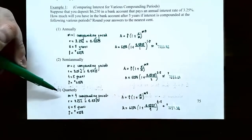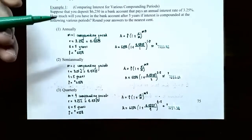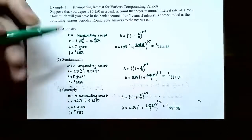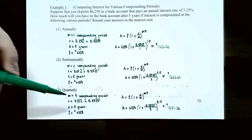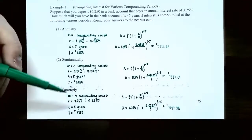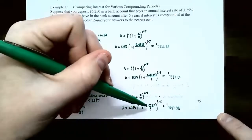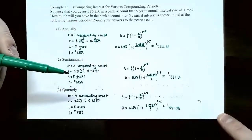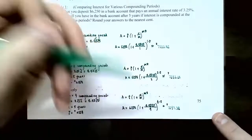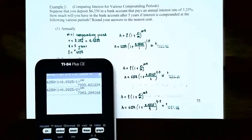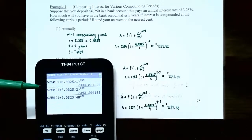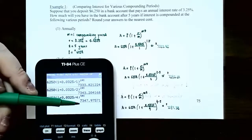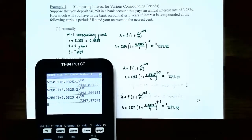Part three: compounded quarterly means four times a year, every three months, so M = 4. Using the compound interest formula: A = 6250(1 + 0.0325/4)^(4×5). The exponent is 4 × 5 = 20 total compounding periods. The accumulated balance is approximately $7,347.98.